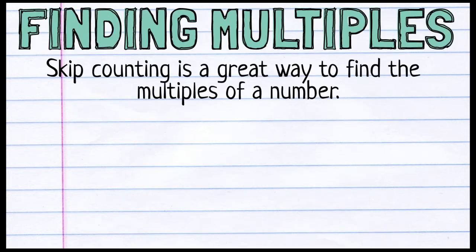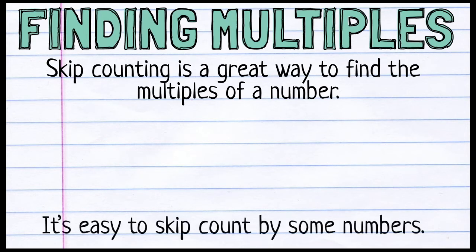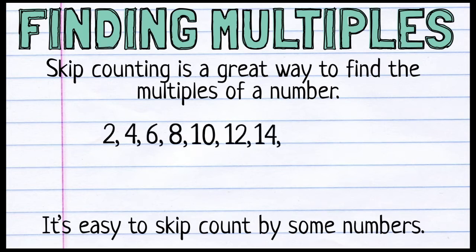So how do we find multiples? Well, skip counting is a great way to find the multiples of a number. And some numbers are really easy to skip count by. Like 2. It goes like this. 2, 4, 6, 8, 10, 12, 14, 16, 18, 20. You've probably been counting by 2's since you were very small.